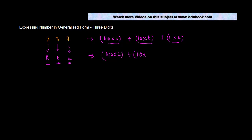Plus 1 into u, u is equal to 7. And if you take the sum of these, you will get 200 plus 30 plus 7, which effectively is nothing but the number itself.